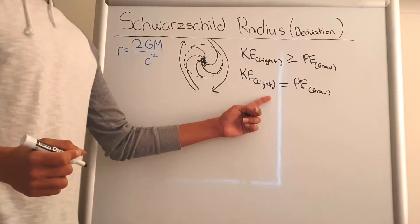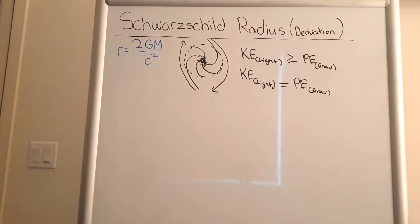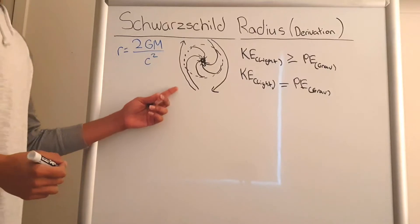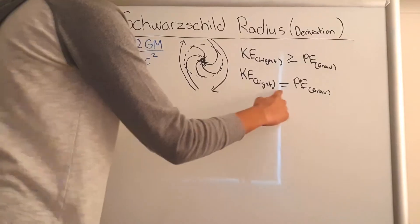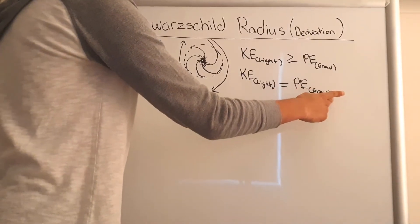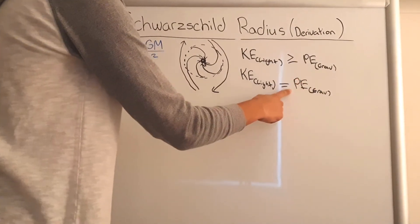And so if we rearrange this equation, we can get the Lagrangian of the light. And we can set that equal to zero because when you move this over to the other side, there's nothing here, which is zero, and this gets a minus sign.